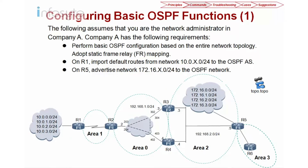This is our UBIW Lab to show you the configuration command. Assume that you are the network administrator in Company A. Company A has the following requirements: perform the basic OSPF configuration on the entire network topology and adopt the static frame relay FR mapping. On R1, perform the import route — import the default route for 10.0.X.0/24 — and R5 advertises the 172.16.X.0 into the OSPF.